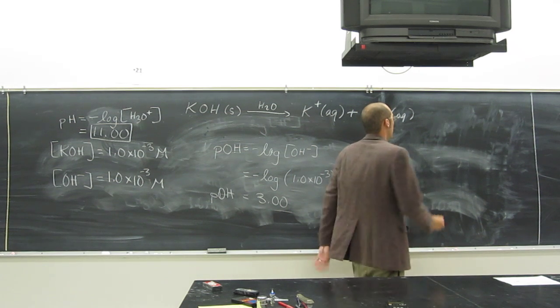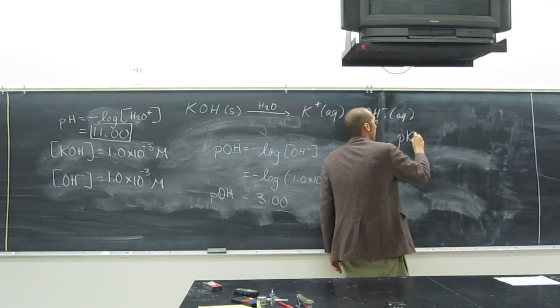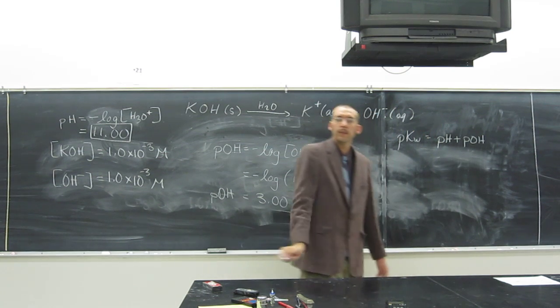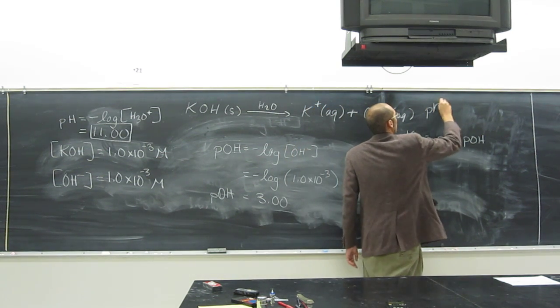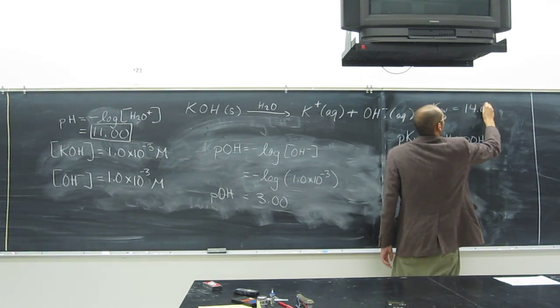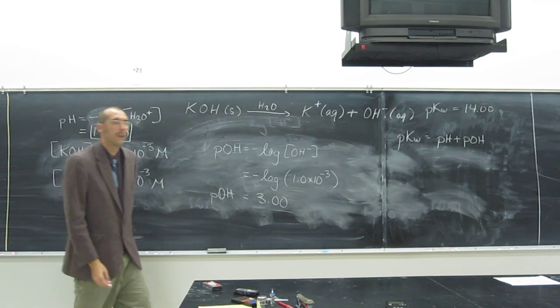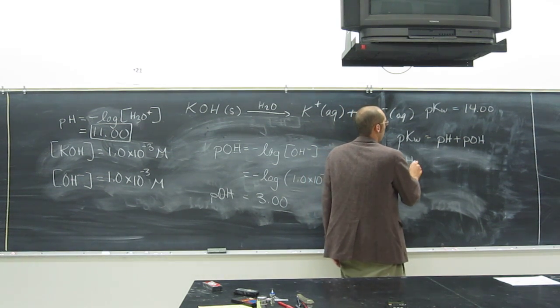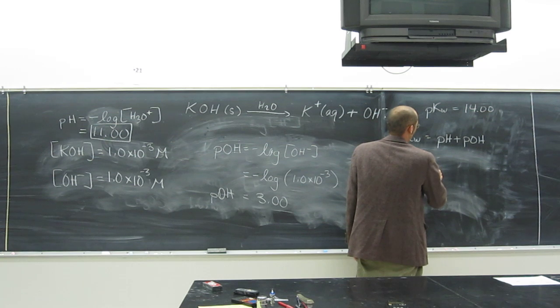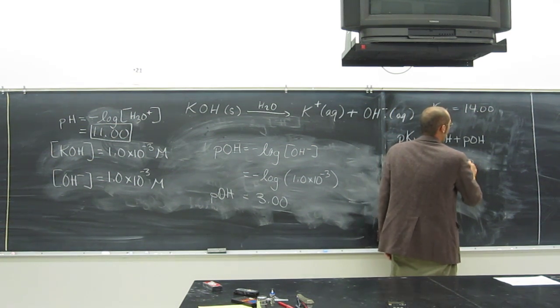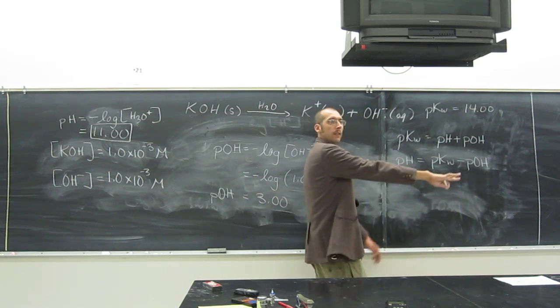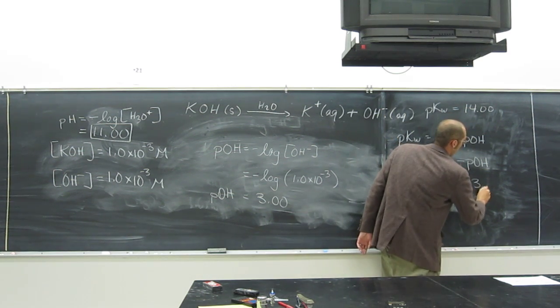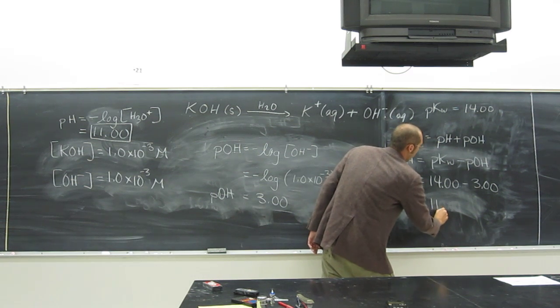pOH equals 3.00. We also know something else. What other formula do we know? That the pKw equals the pH plus the pOH. Isn't that right? We know that. We also know that pKw, sorry about that, is what? 14. 14.00. We'll do it the same number of decimals. So, we should be able to figure out what the pH is doing this way. So, pH is going to be the pKw minus the pOH. Is that right? Yes. And then, that's 14.00 minus, what is it? 3.00? What do we get? 11.00.